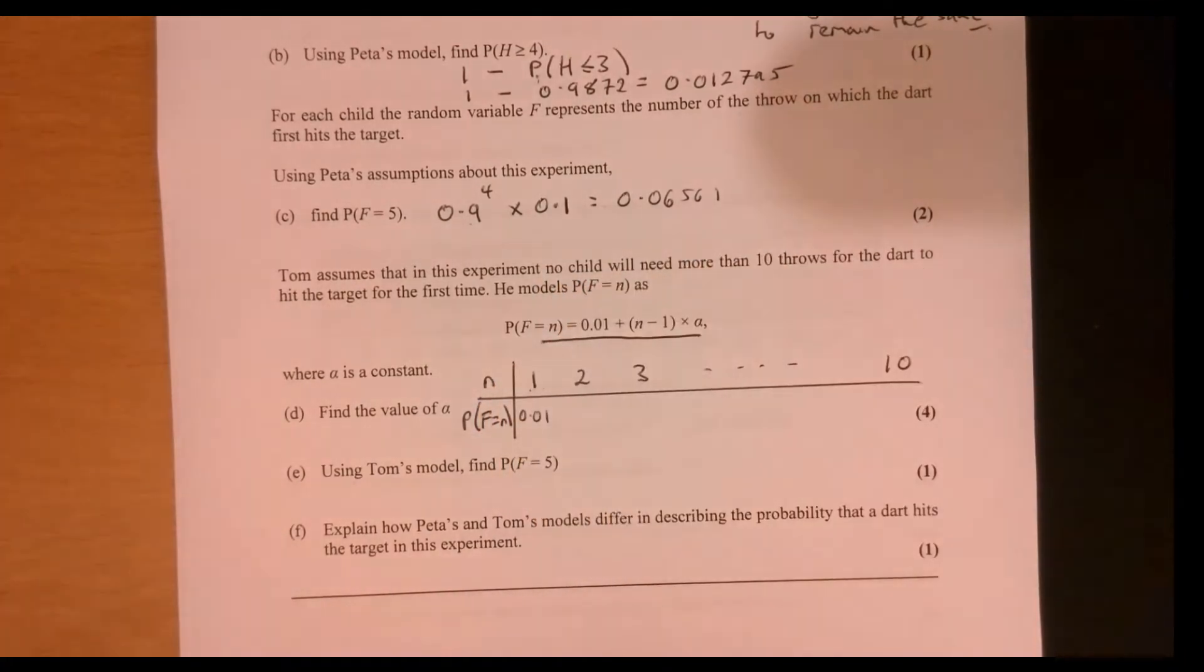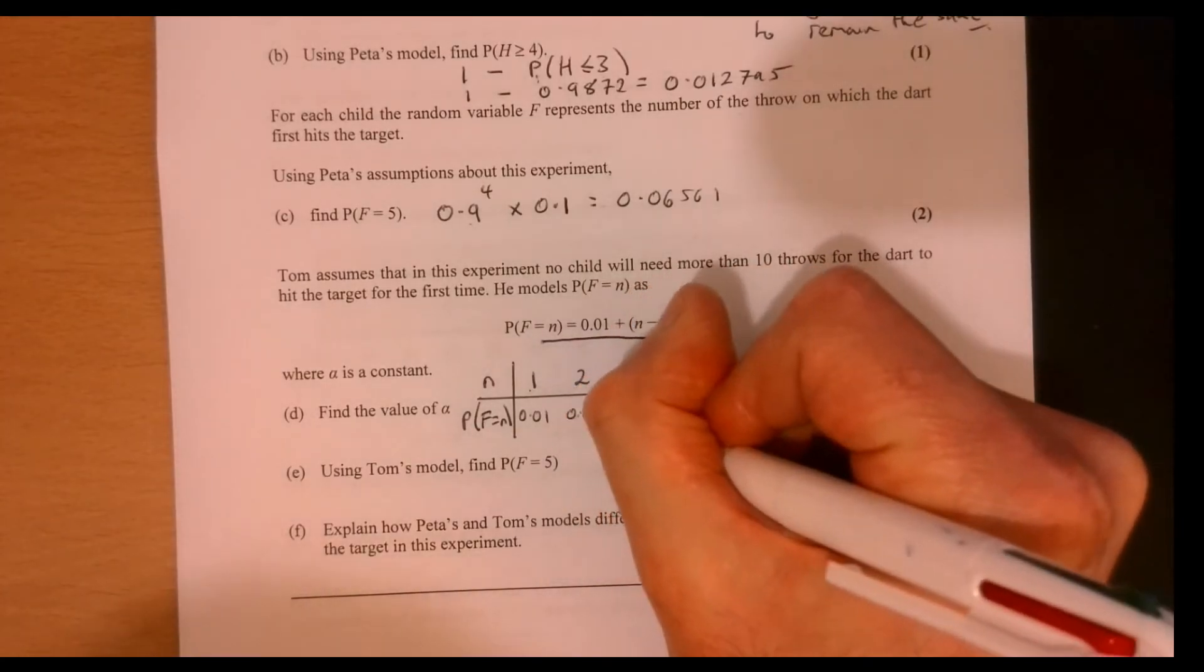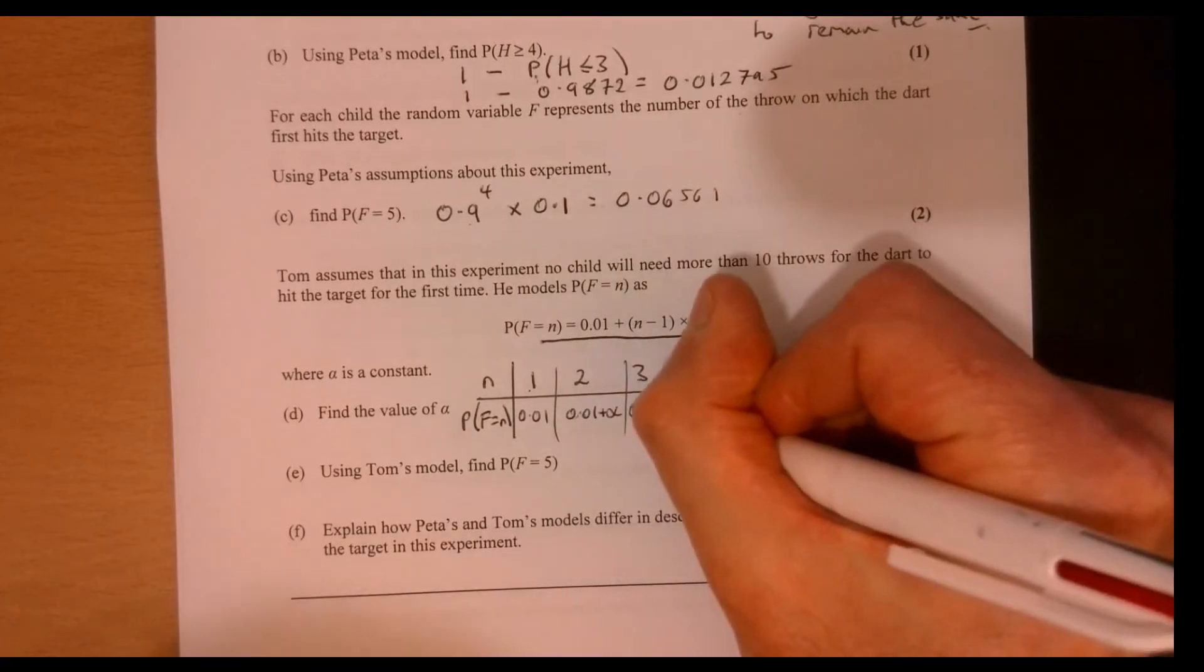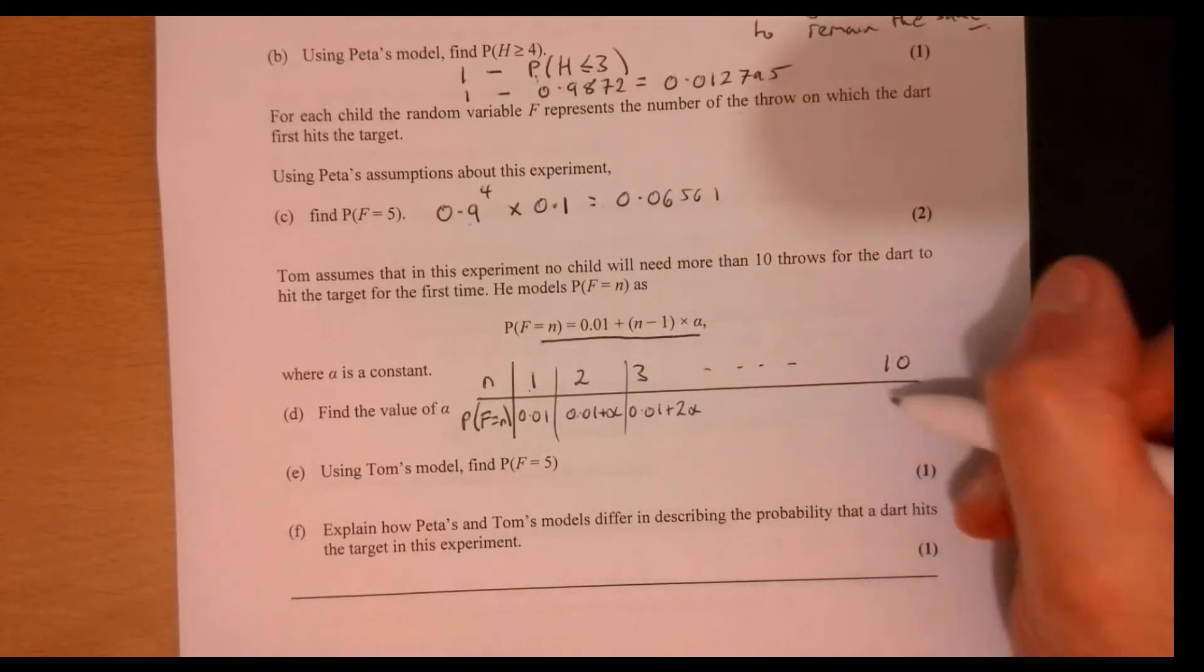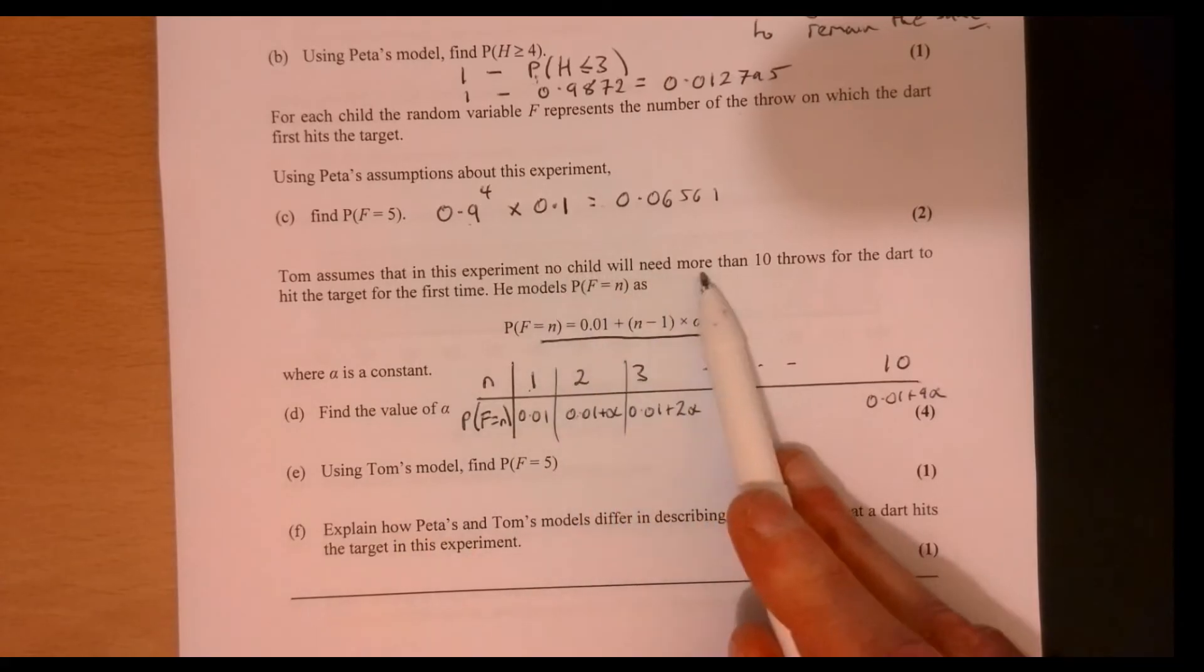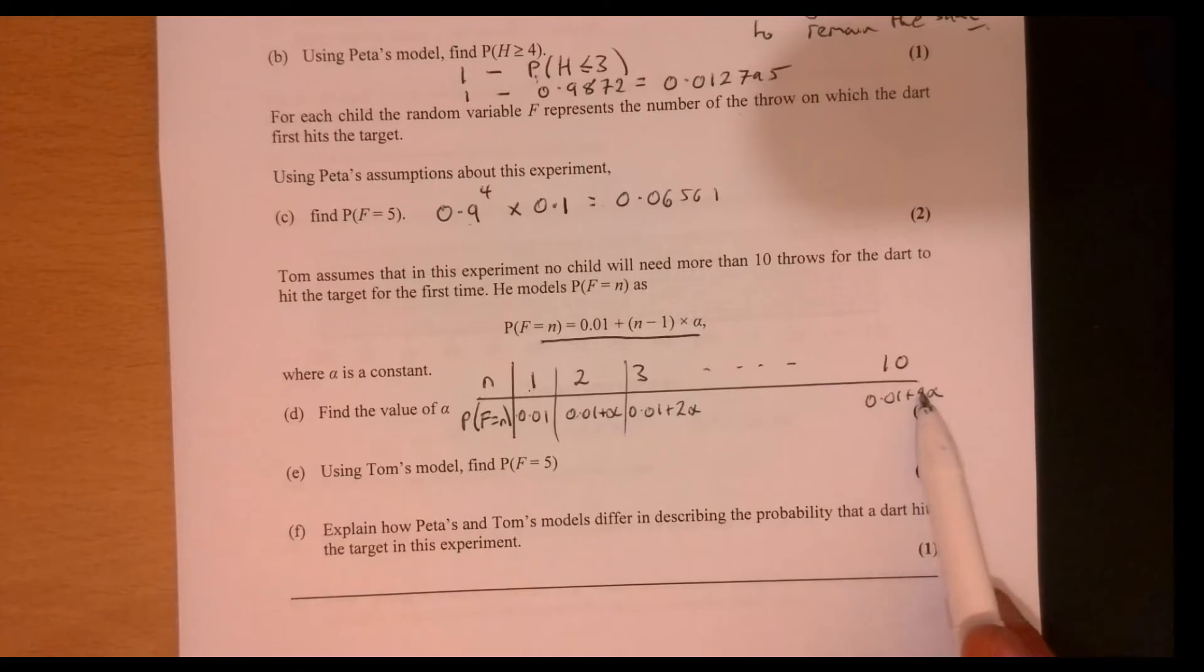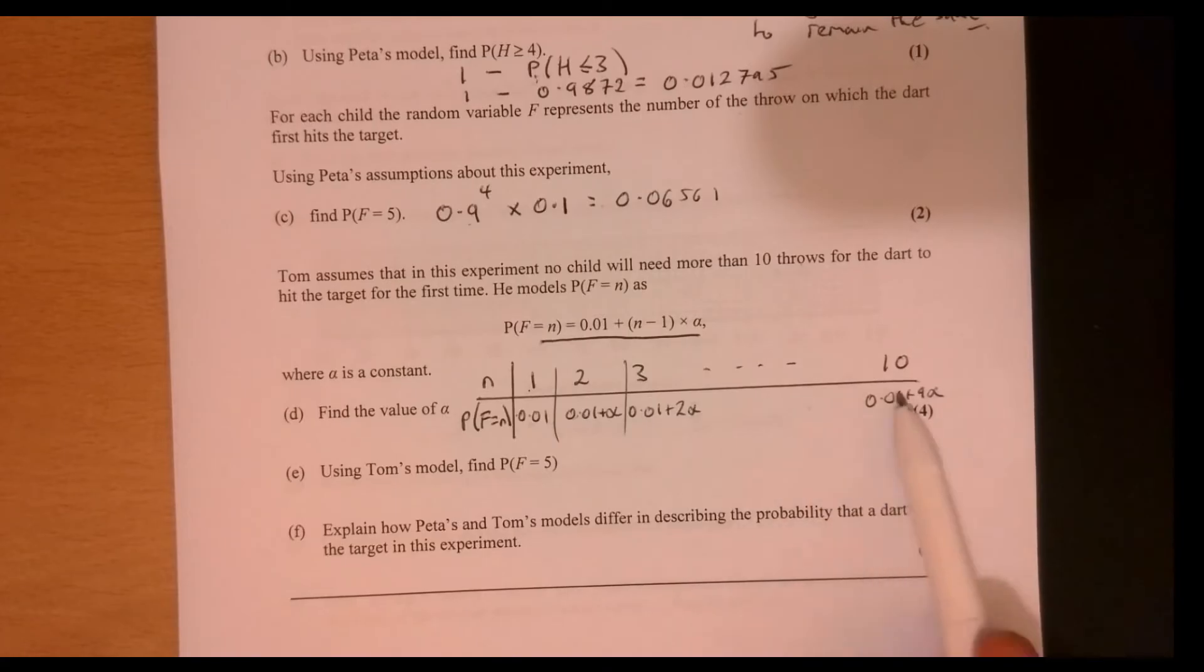And the reason I'm doing this, I'm not too sure about where it's going. So I'm just trying to set it out and think about what's really happening. So the next one would be 0.01 plus this alpha thing that we're trying to work out. And then the next one, I'm just plugging three into this, would give me 0.01 plus 2 alpha. And so on until the last one, which would give me 0.01 plus 9 alpha. Now, something really important that it says, Tom assumes that in this experiment, no child will need more than 10 throws. So that means that this must add up to one. That's really important.